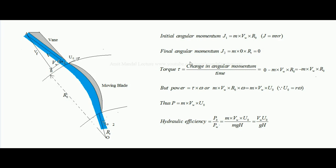The change in angular momentum per unit time is the torque: J2 − J1 = 0 − m·v_w·r_o = −m·v_w·r_o. Since m is already in kg/s, this momentum change per second gives the developed torque over the blade. Considering only the magnitude, we can neglect the negative sign.